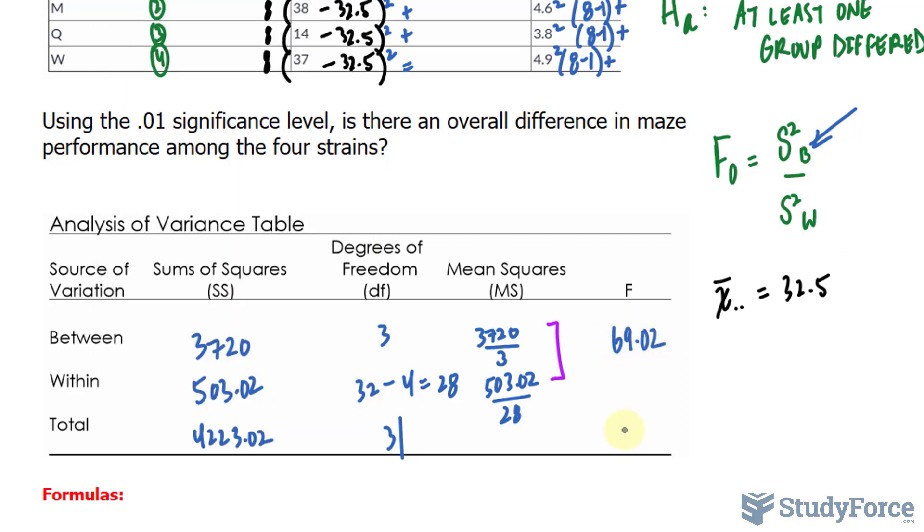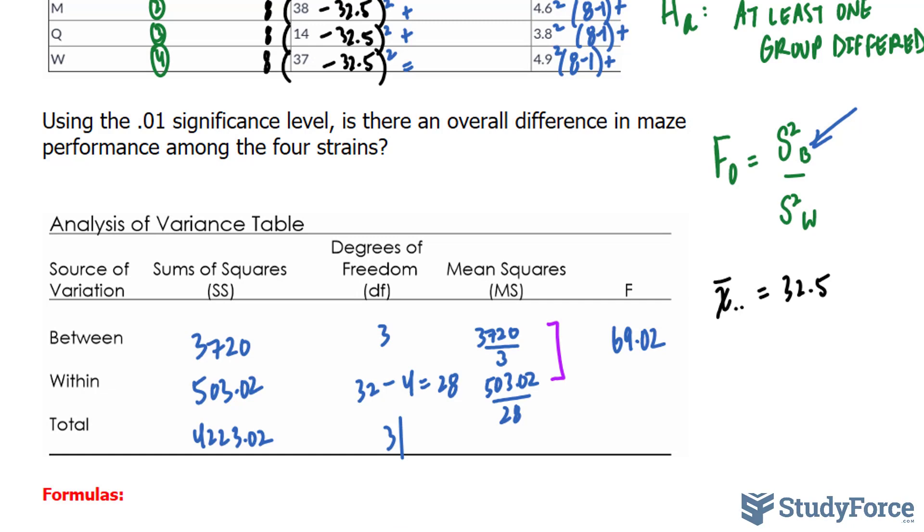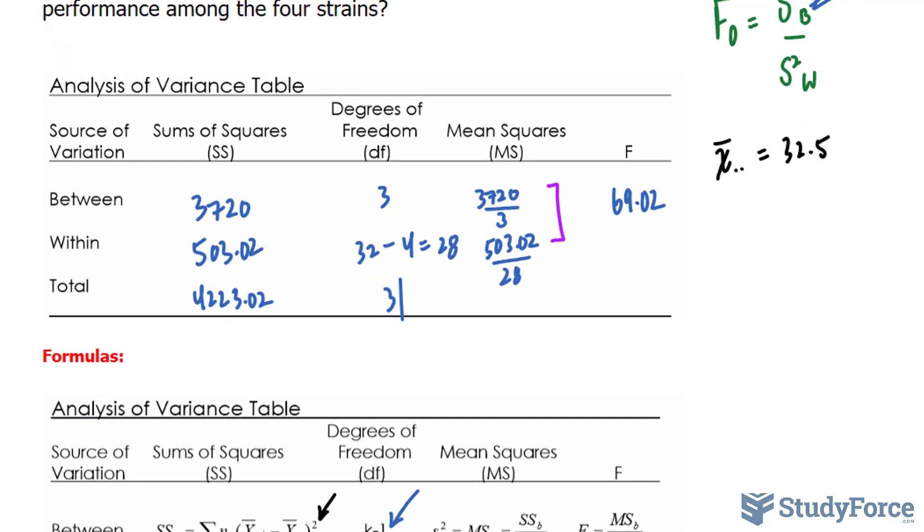In step number 4, we have to compare this to f critical and make a decision, a decision whether to accept or reject the null hypothesis. So how do we find the f critical? What is that? Well, we'll need a table, and the table is specific for an alpha value of 0.01, a degrees of freedom between, that is 3, and a degrees of freedom within, that is 28.